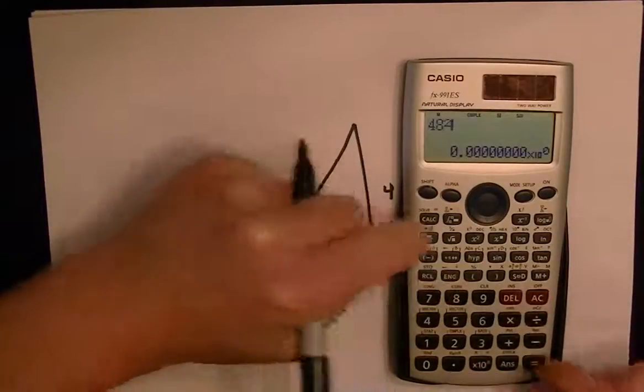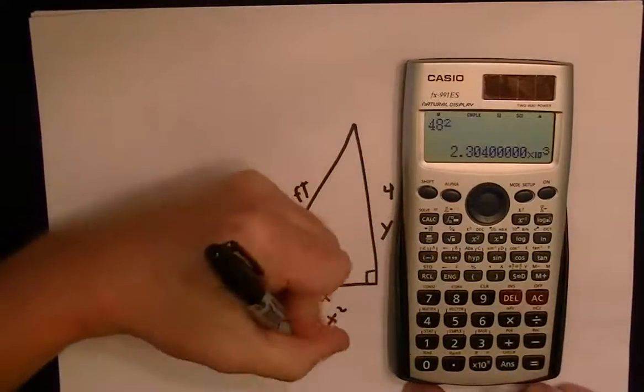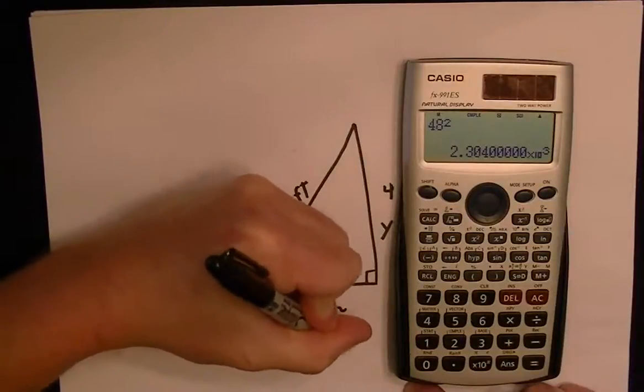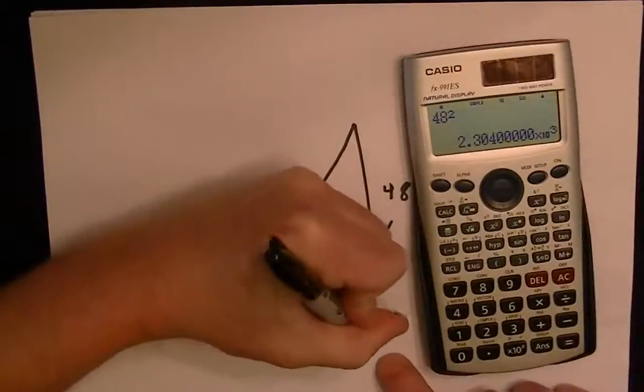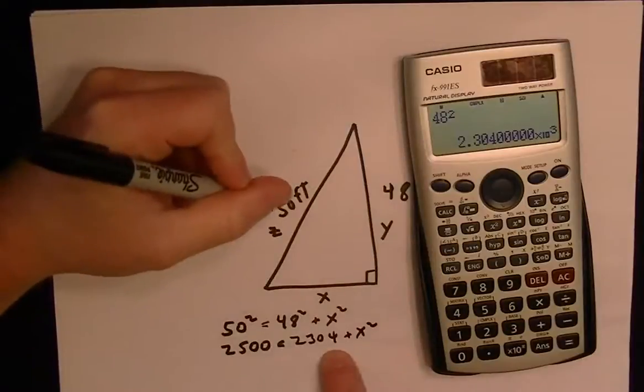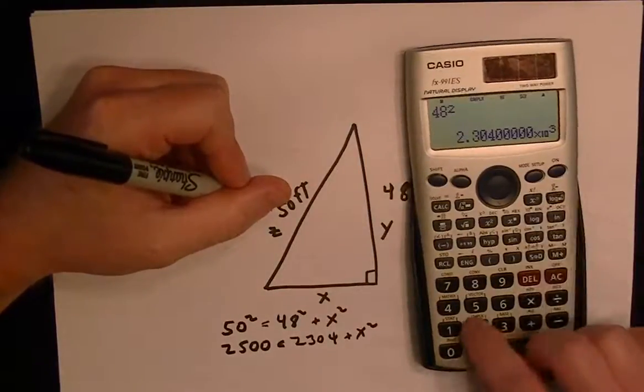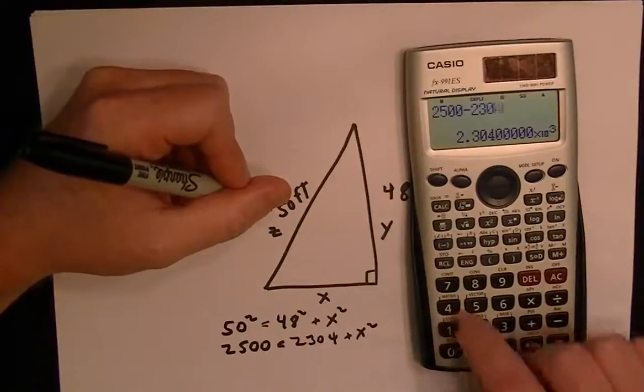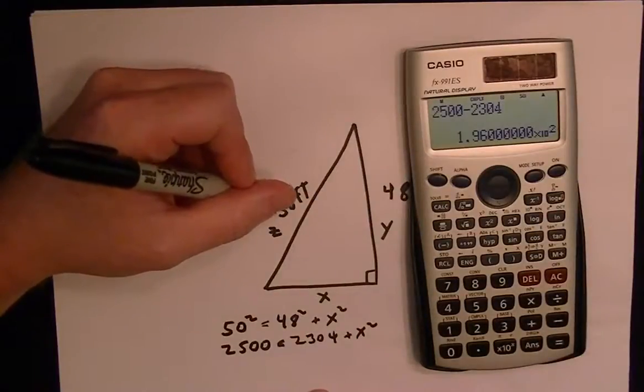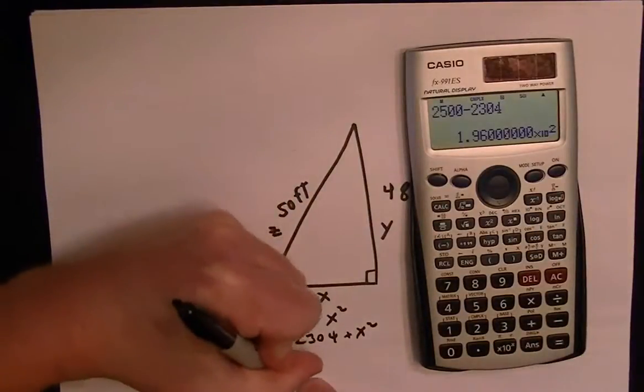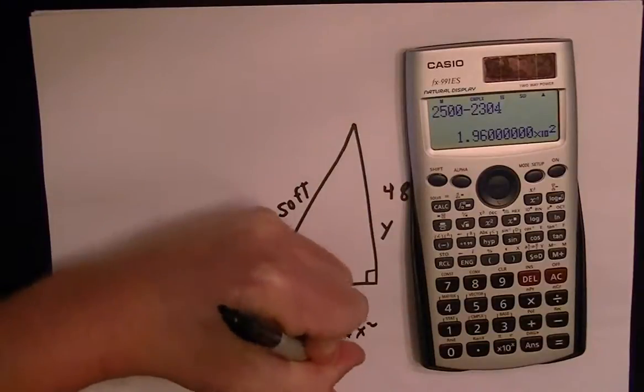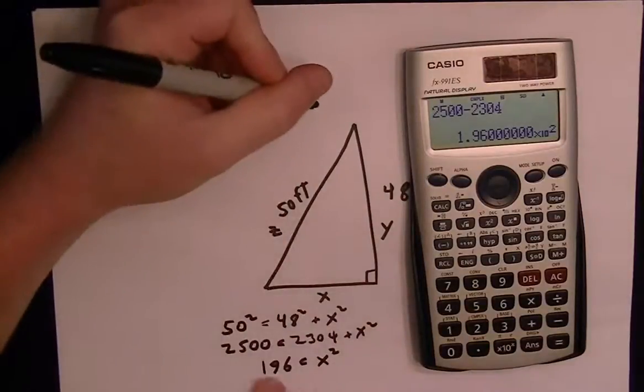And then 48 squared is equal to 2304 plus x squared. So now we just subtract 2304 from both sides, so 2500 minus 2304. So that will give me 196 is equal to x squared.